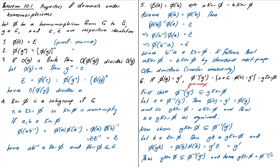This is a really important result because it means the kernel of the homomorphism is a very important subgroup: the cosets of it each map to individual elements of the target group G-bar. So if we partition our group G into cosets of the kernel, each piece maps to exactly one element of G-bar. We'll find out more about what that image looks like in the next video — that's enough for now, see you later.